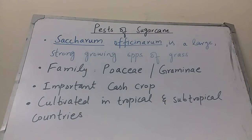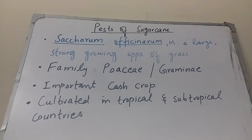But first of all, what is sugarcane? Sugarcane, whose botanical name is Saccharum officinarum, is a large strong-growing species of grass. It belongs to the Gramineae family, also known as Poaceae, which also includes maize, wheat, rice, sorghum, and many forage crops.